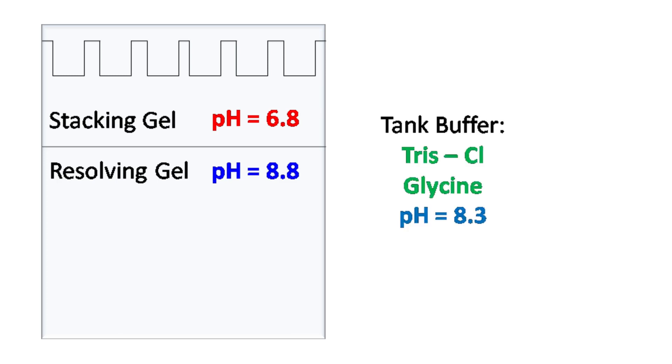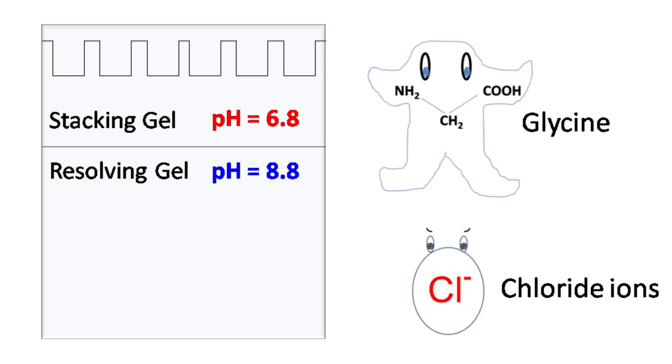And the buffer that we use for the electrophoresis has Tris-Cl glycine with pH of 8.3. So now let's see how glycine and chloride ions present in the buffer help in the sandwiching of proteins.